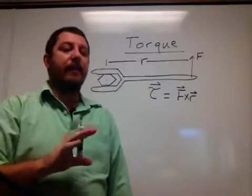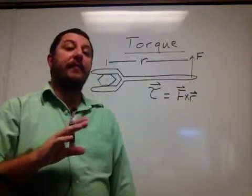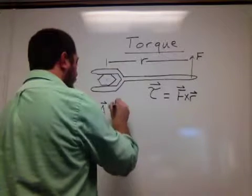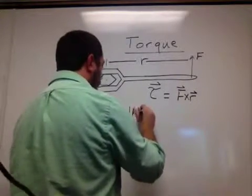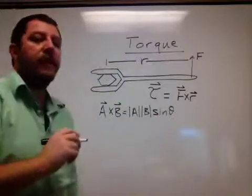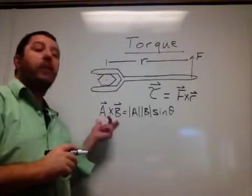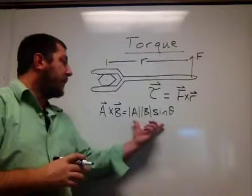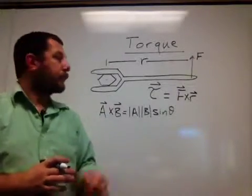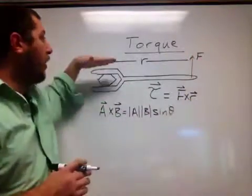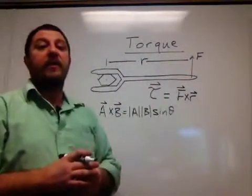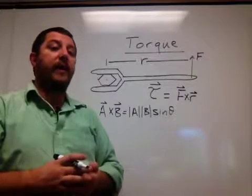As a basic definition: if you have two vectors A and B and cross them, the magnitude of the resulting cross product is given by the magnitude of A times the magnitude of B times the sine of the angle between the two vectors. In our case, F is applied upward and R is measured from the axis of rotation to where the force is applied. The angle between F and R is 90 degrees.